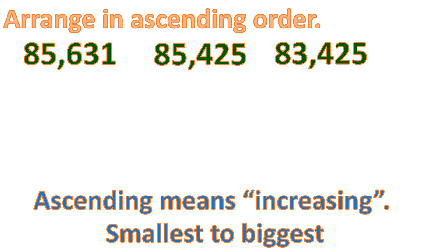So how are we going to arrange this in order? First is to compare the numbers by each digit, starting from the left, where the left contains the biggest place values.